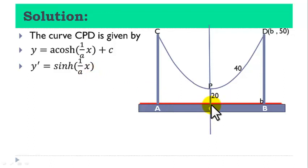At the point x equal to 0, that is why we put x equal to 0 here, a cosh 0 plus c will give us y equal to a plus c. But at the point P, y is 20, so a plus c is equal to 20. Let us number this as equation 1.